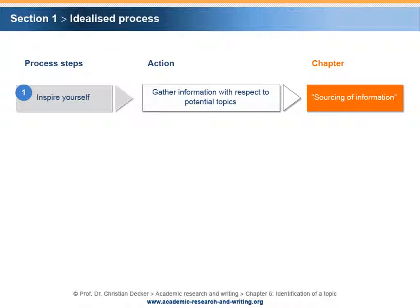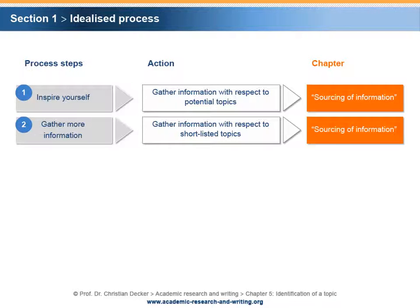Step 1 – Inspire yourself: Gather information with respect to potential topics. The chapter on Sourcing of Information will provide you with techniques and tools to be used. Step 2 – Gather more information: Gather information with respect to shortlisted topics. Again, the chapter on Sourcing of Information will provide you with techniques and tools to be used.